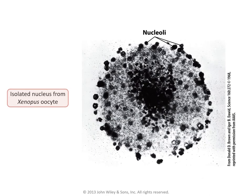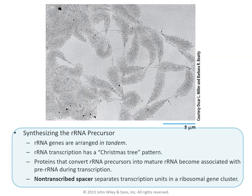To understand how ribosomal RNA precursors are synthesized, amphibian eggs are very useful models because they are large and have many nucleoli. This is expected since a large number of nucleoli are needed once the egg is fertilized for making ribosomes essential for embryonic development. This light micrograph of an isolated nucleus from a Xenopus oocyte is stained to show the hundreds of nucleoli.